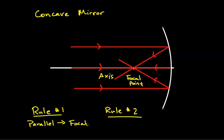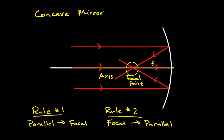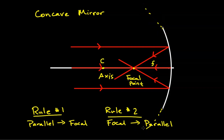And if we think of this in reverse: if you were to shine a light through the focal point, then it will bounce back parallel to our optical axis. One more thing to notice is that if you were to double the distance from the mirror to the focal point — this little F — you would get the center of curvature. That means if you were to extend this mirror all the way as a circle, this would be the center of that circle.